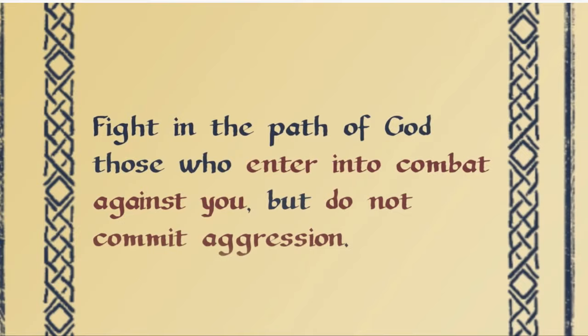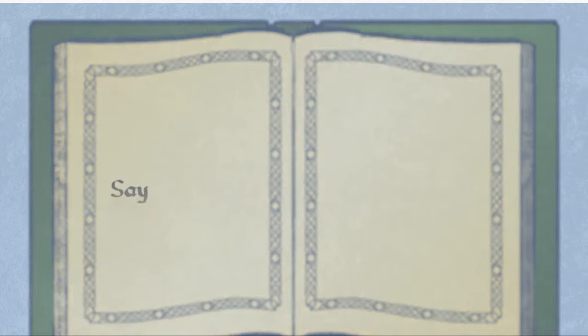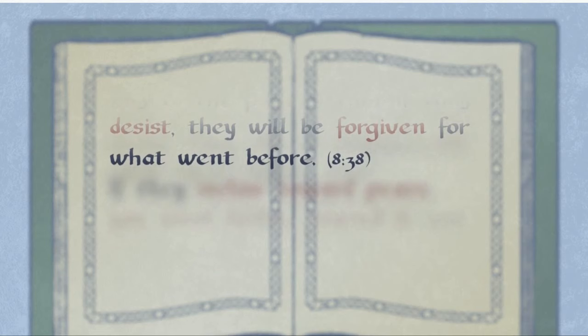The Quran instructs the Prophet to forgive the enemy and to always seek peace. Say to the pagans that if they desist they will be forgiven for what went before. It adds: If they incline toward peace, you must incline toward it.